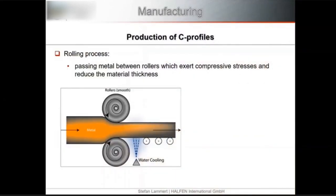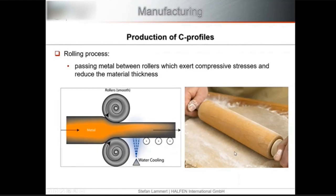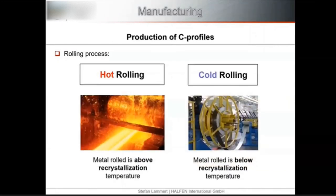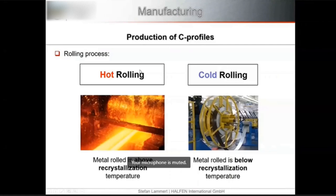Rolling is the most typical manufacturing method for cast-in channels — a process in which metal is passed through pairs of rollers to reduce thickness and achieve the desired geometry. Rolling is classified by temperature: if the metal is above the recrystallization temperature (approximately 400–700°C for steel), it is hot rolling; below that temperature it is cold rolling. For steel, hot rolling is conducted at 850–1200°C, while cold rolling is done near room temperature.